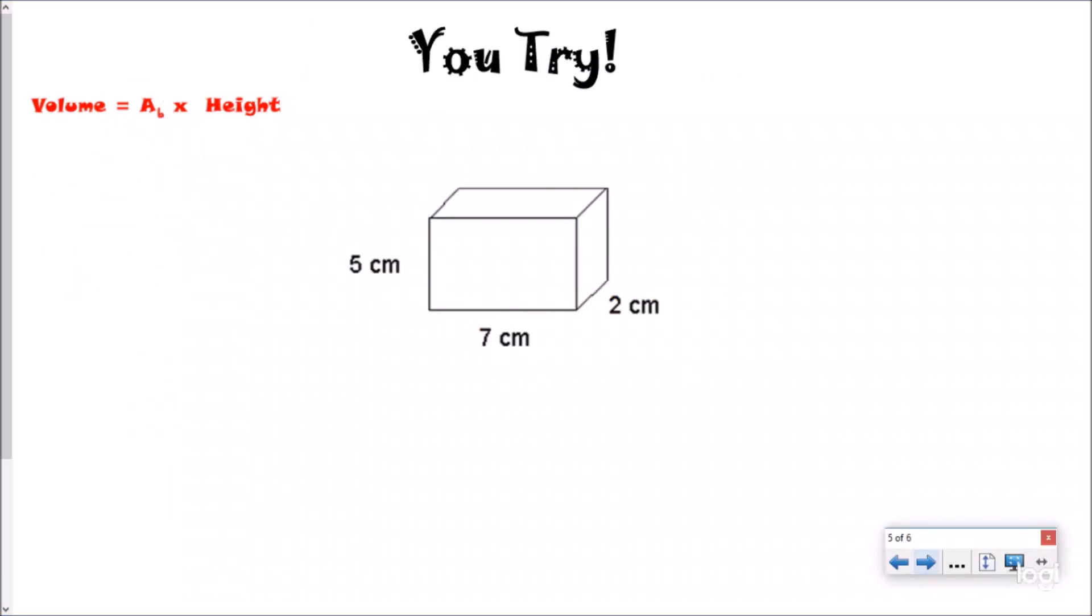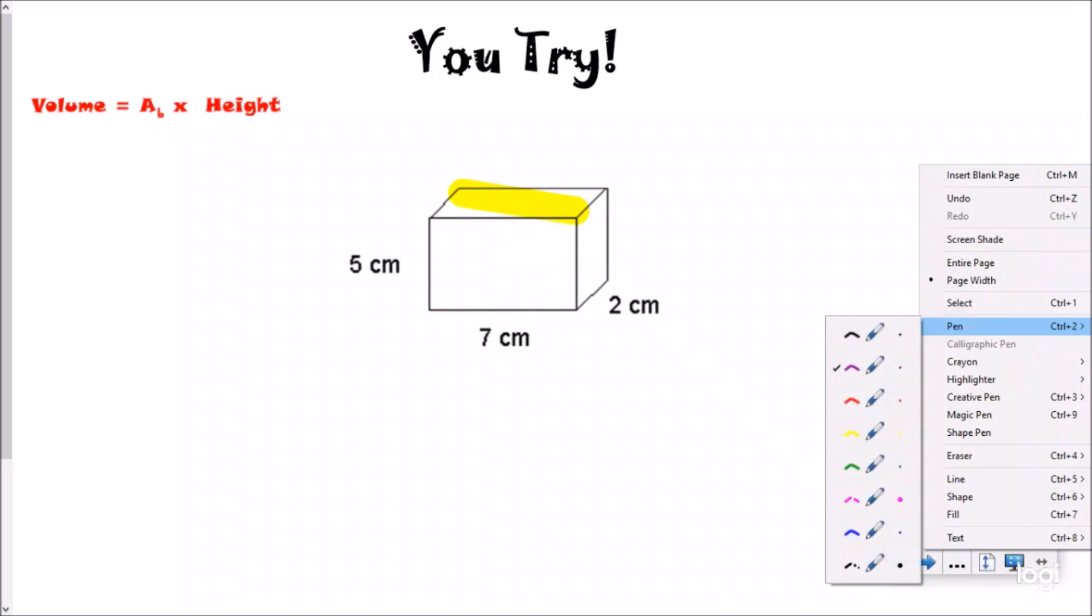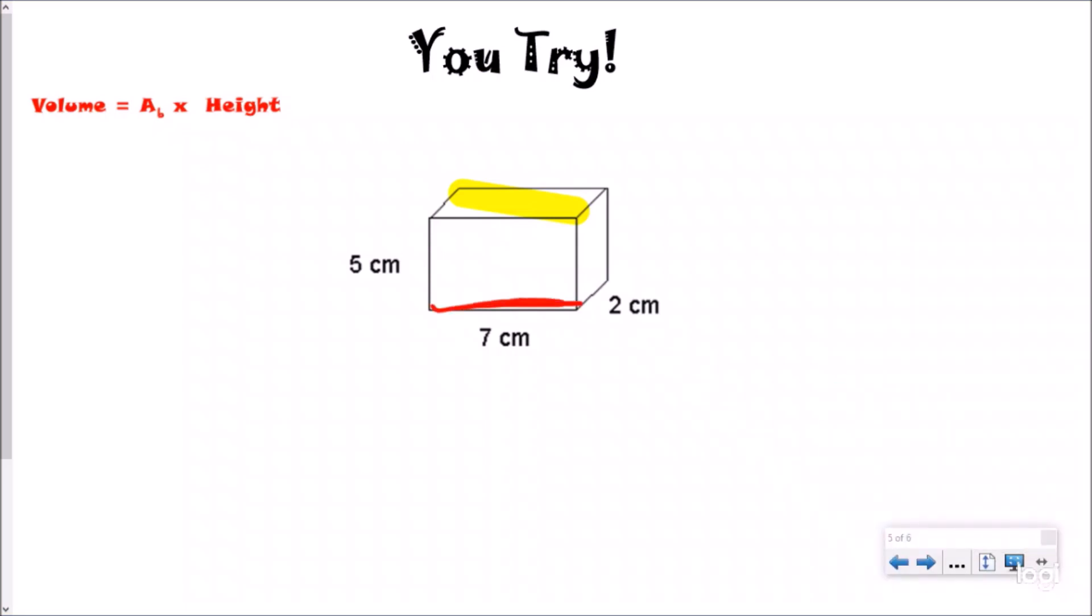So go ahead and pause this one, go ahead and try it, and then we'll just check our work really quick. So hopefully you paused it and you just tried it. I can't count the area of my top. First thing I want to do is find the area of my base, which is the same as the top. And so to do that, I'm going to use my length, which is seven and my width, which is two. Obviously that would be 14. And so the area of my base is 14. What I just did is I split this into length times width, so seven times two. And then I have five layers of that. That's my height, which I see right here.